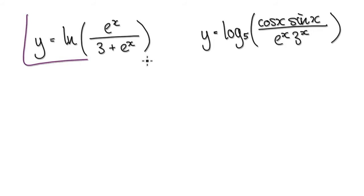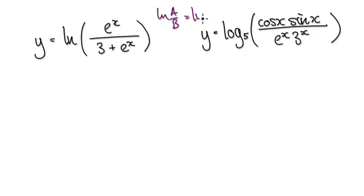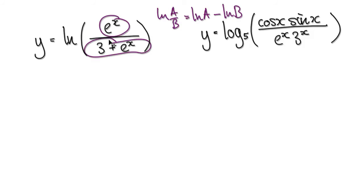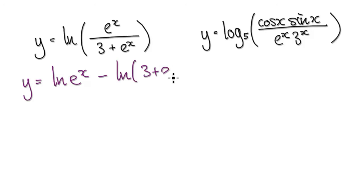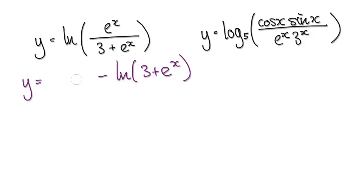To do the first one, remember whenever you log one thing divided by another, that's the same as natural log of a take away natural log of b. So here you've got one thing divided by another thing. So rewrite this as y equals natural log of e to the power of x, take away natural log of 3 plus e to the power of x. Now tidy this up — this term becomes just x.